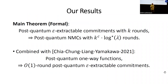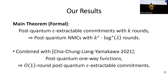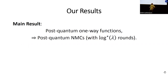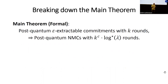Our main theorem is that if we have post-quantum epsilon-extractable commitments (to be defined) with k rounds, we can construct post-quantum non-malleable commitments in k^c rounds for some constant c, times log-star of the security parameter lambda. Combining this with prior work by Chia, Chung, Liang, and Yamakawa — who show how to construct constant-round epsilon-extractable commitments from post-quantum one-way functions — gives our main corollary: assuming post-quantum one-way functions, we have post-quantum non-malleable commitments in log-star rounds.